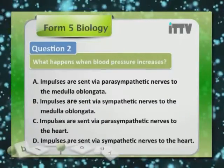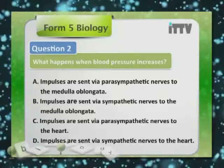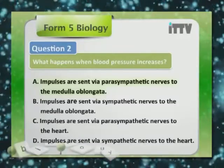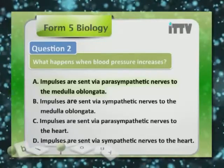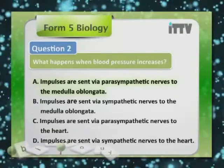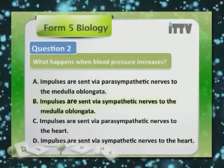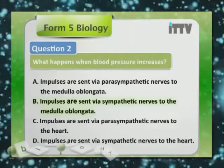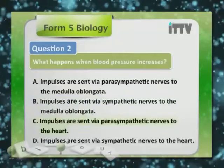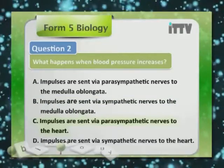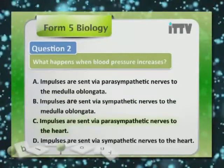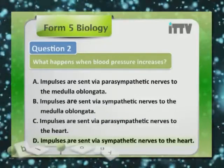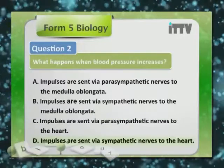Question 2: What happens when blood pressure increases? A. Impulses sent via parasympathetic nerves to medulla oblongata. B. Impulses sent via sympathetic nerves to medulla oblongata. C. Impulses sent via parasympathetic nerves to the heart. D. Impulses sent via sympathetic nerves to the heart.